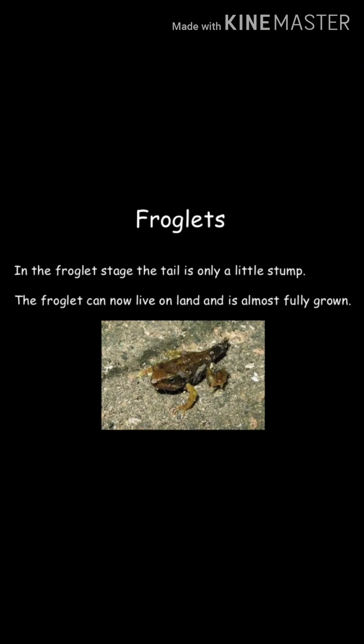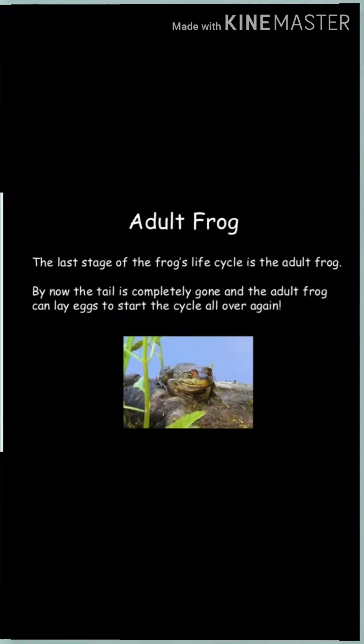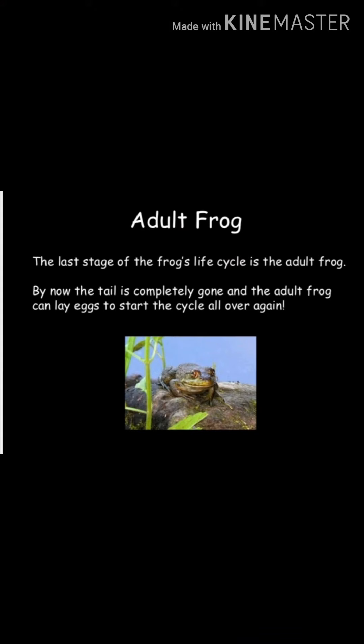Coming to the fourth stage, that is the froglet. In the froglet stage, the tail is only a little stump. A stump is the part of the body remaining after it has been cut. The froglet can now live on land and is almost fully grown.